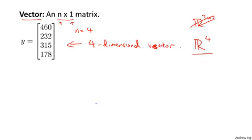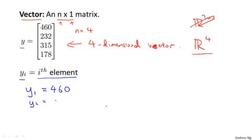Next, let's talk about how to refer to elements of the vector. We use the notation yi to refer to the i-th element of the vector y. So if y is this vector, y subscript i is the i-th element. y1 is the first element, equal to 460. y2 equals the second element, 232. y3 equals 315, and so on. Only y1 through y4 are defined because this is a four-dimensional vector.